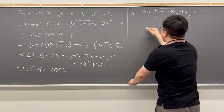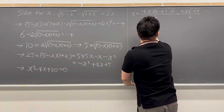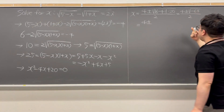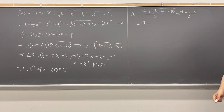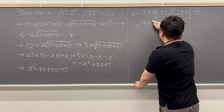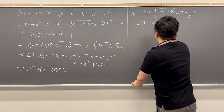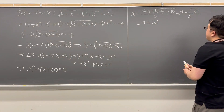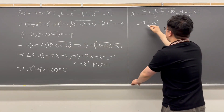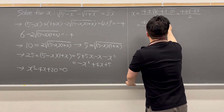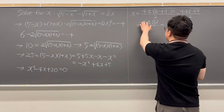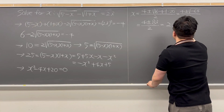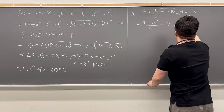We can rewrite this as 4 plus or minus the square root of negative 64 over 2. The square root of 64 is 8, so this becomes 8i because we have a negative sign inside the square root. That divided by 2 gives us x equals 2 plus or minus 4i.